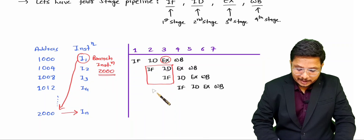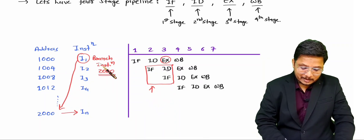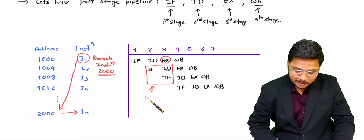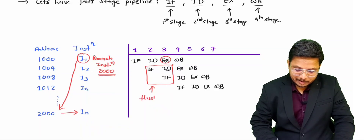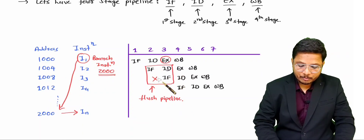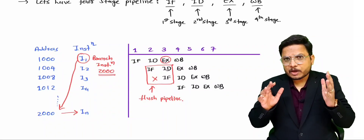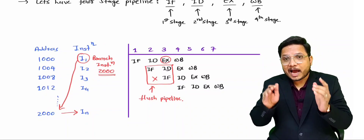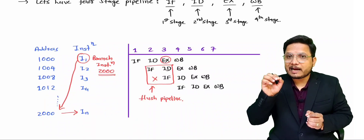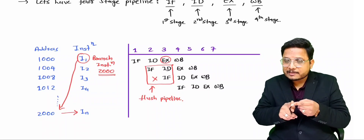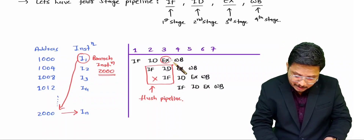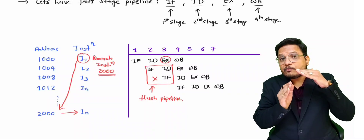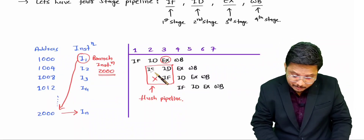Those incorrectly fetched instructions need to be removed from the pipeline, because after the branch instruction, the next correct instruction should be the IN instruction at address 2000. So we need to flush the pipeline. Because the branch target is identified during the Execute stage, whatever has been filled in the pipeline before that point must be flushed. After flushing, starting from the fourth cycle, Instruction Fetch of the IN instruction can begin.